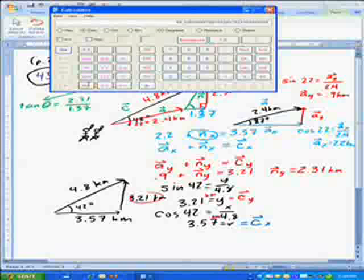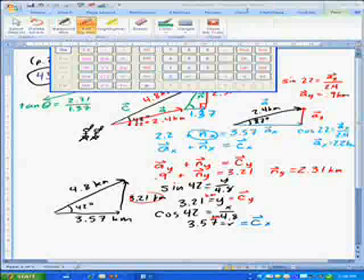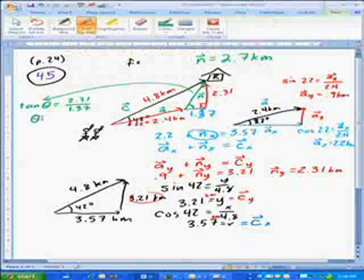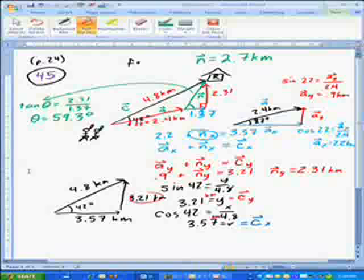So 59.3 degrees, the angle equals 59.3 degrees. So that's this angle right here. That's 59.3 degrees north of east, because this is east and I'm going to go north from there. And that's the answer to number 45. Good luck with the rest of your homework.